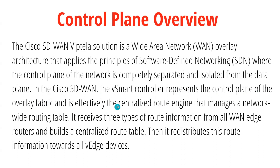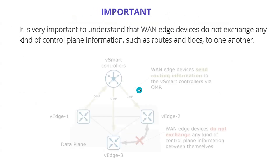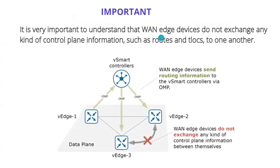Every single control policy has to be created on vSmart itself. Although it has to be created at vManage, it will actually be pushed from vManage to vSmart, and vSmart will push it further to the respective routers. If the policy impacts two vEdge routers, the vSmart will instruct only those two sides to follow the rules. It's very important to understand that vEdge devices do not exchange any kind of control plane information such as routes or TLocs to one another.